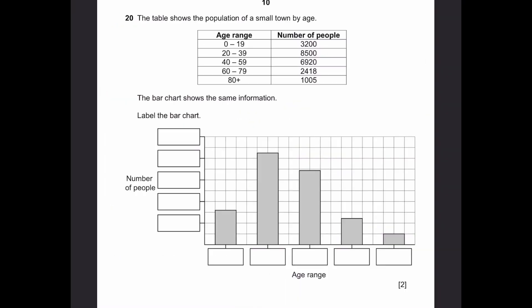Question 20. The table shows the population of a small town by age. The bar chart shows the same information. Label the bar chart. The age range is on the horizontal axis. Number of people is vertical. I'll write the age range. 0 to 19, 20 to 39, 40 to 59, 60 to 79, and 80 plus. Now, this thing here is the label for number of people. The top is 8,500. That's equal to 8 plus half bars. So that means one bar will equal 1,000 people. 2,000, 4,000, 6,000, 8,000, and 10,000.